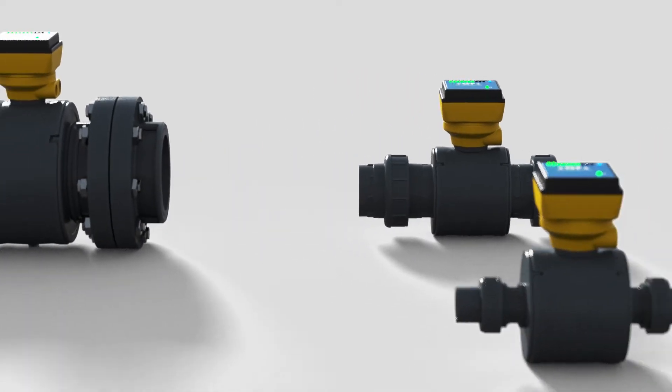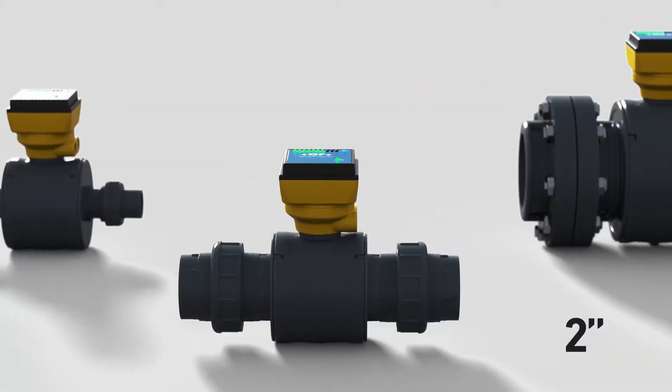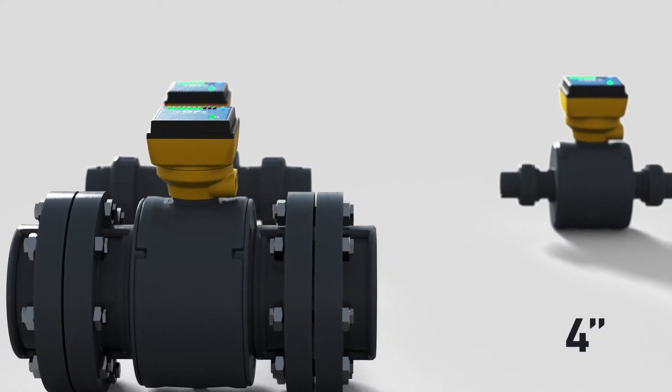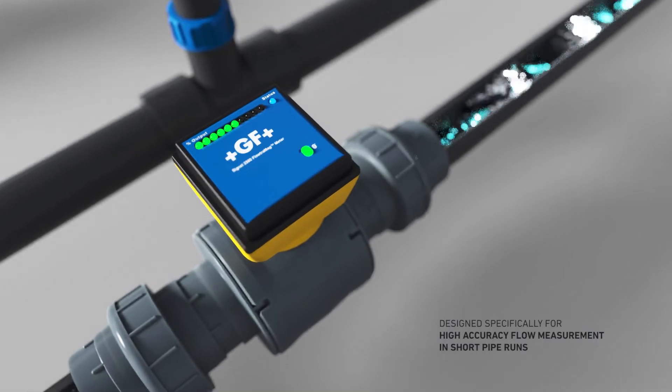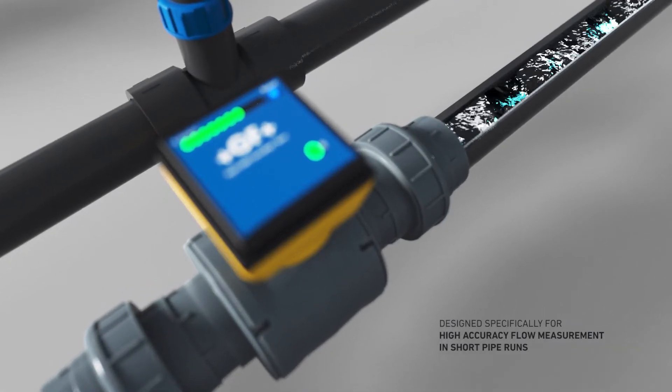The full-bore mag meter is available in pipe sizes of 1 inch, 2 inch, and 4 inch PVC Schedule 80 and is designed specifically for high accuracy flow measurement in short pipe runs.